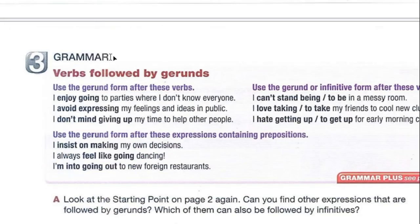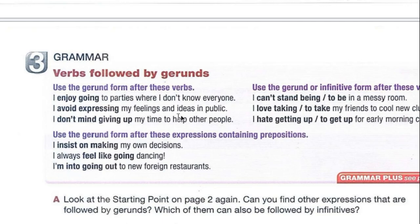Now let's move on into grammar. Number three: grammar — verbs followed by gerunds. Use the gerund form after these verbs. So after enjoy, you need to use the gerund: going — I-N-G — this is the gerund. Expressing is the gerund. Giving, giving up — these are gerunds. The verbs you use the gerund after are: enjoy, avoid, and don't mind. For example: I enjoy going to parties where I don't know everyone. I avoid expressing my feelings and ideas in public. I don't mind giving up my time to help other people.